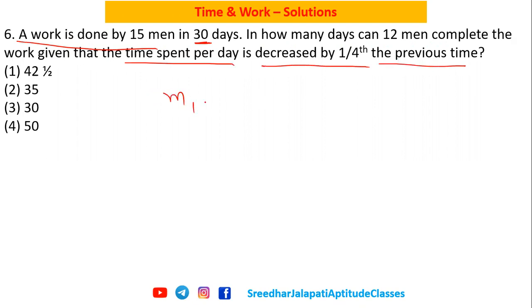We all know that in time and work, when manpower, days, and hours are involved, we use the formula: m1 × d1 × h1 = m2 × d2 × h2.